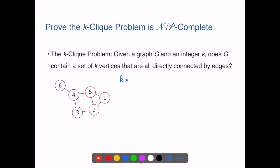when k is 1, we can have any 1 vertex as a 1-clique. When k is 2, we can find any pairs of vertices that are directly connected in this graph.